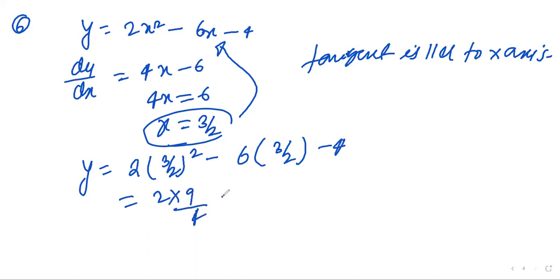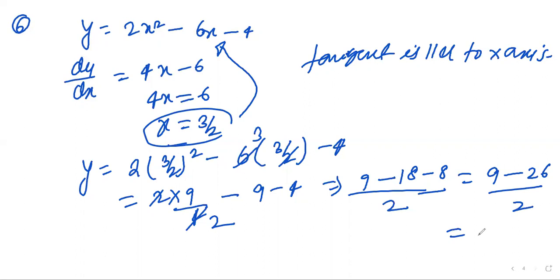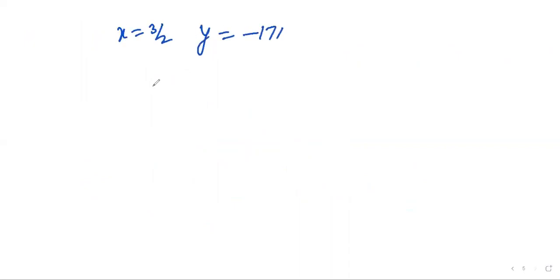So y equal to 2 times 9/4 minus 4. With LCM as 2, it becomes 9 minus 18 minus 8 over 2, giving minus 17 by 2. So this is your y value. You have got x as 3/2 and y as minus 17/2. So these are the required points. Please write it down.